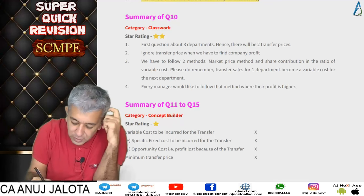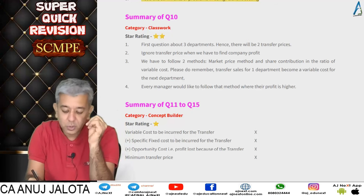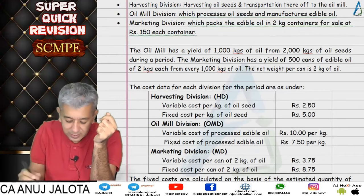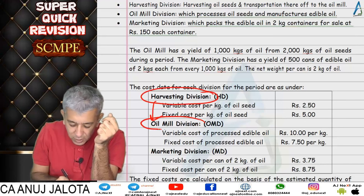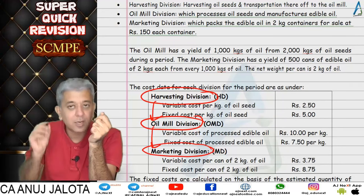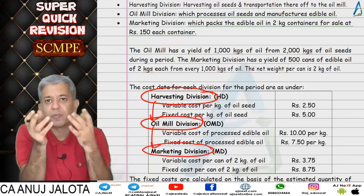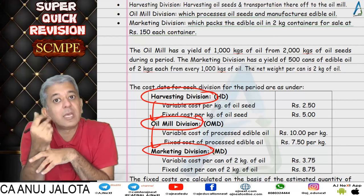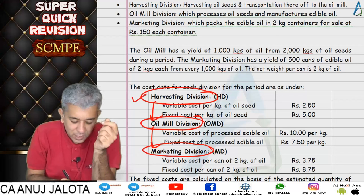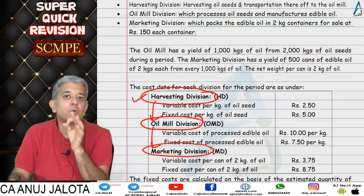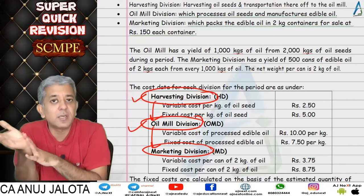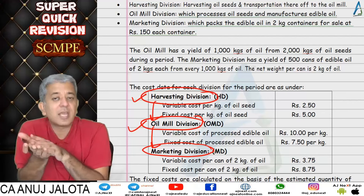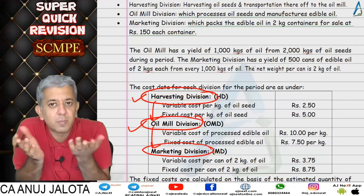Question number ten was the first question with three departments, not two. A harvesting division transfers to the oil mill division, which transfers to the marketing division. Part one asked to find the company's profit — no discussion of transfer prices. Part two gave two transfer price methods: market price method (whatever rate the harvesting division can sell in the market becomes transfer price; same for oil mill division) and shared contribution in the ratio of variable cost.